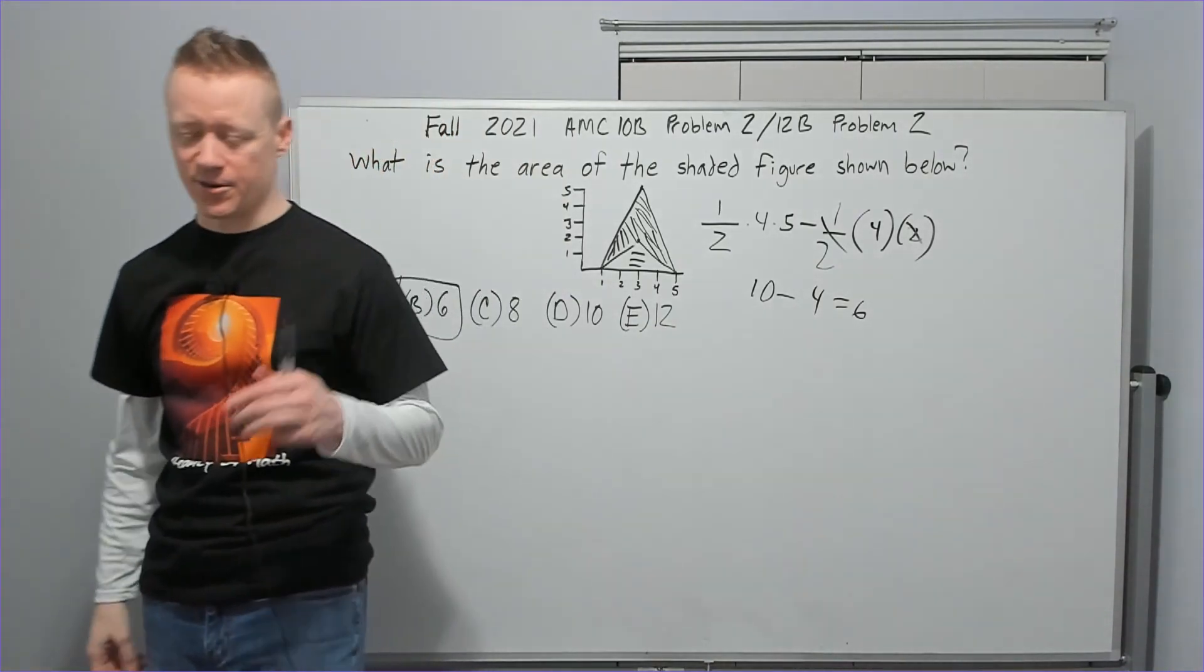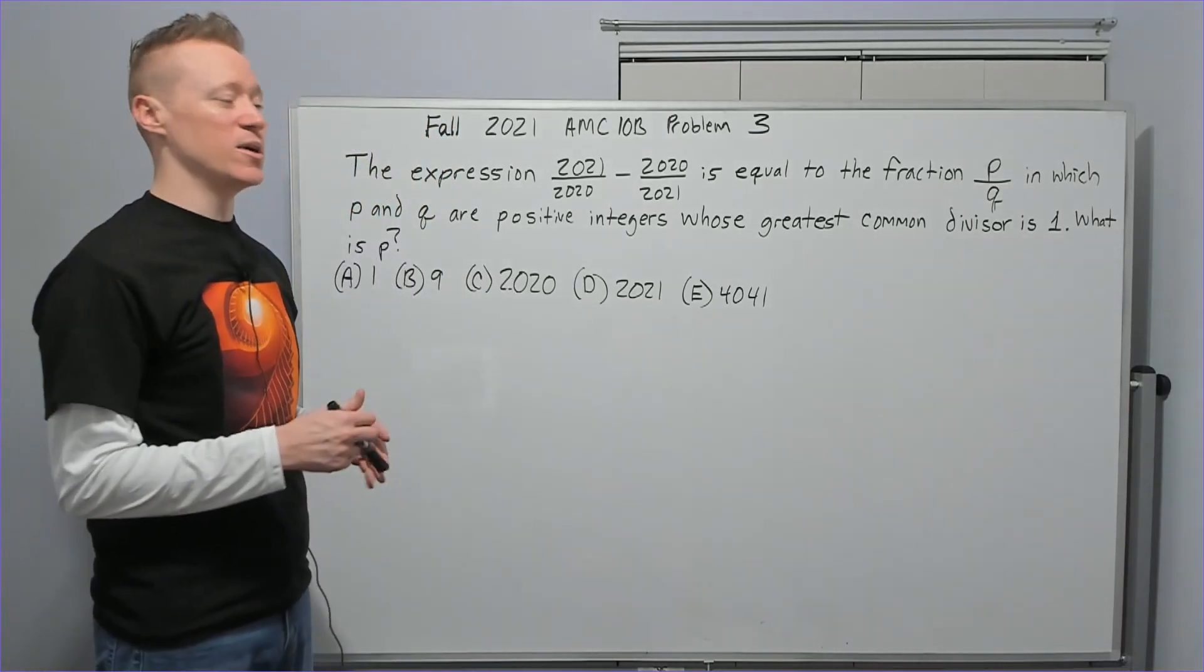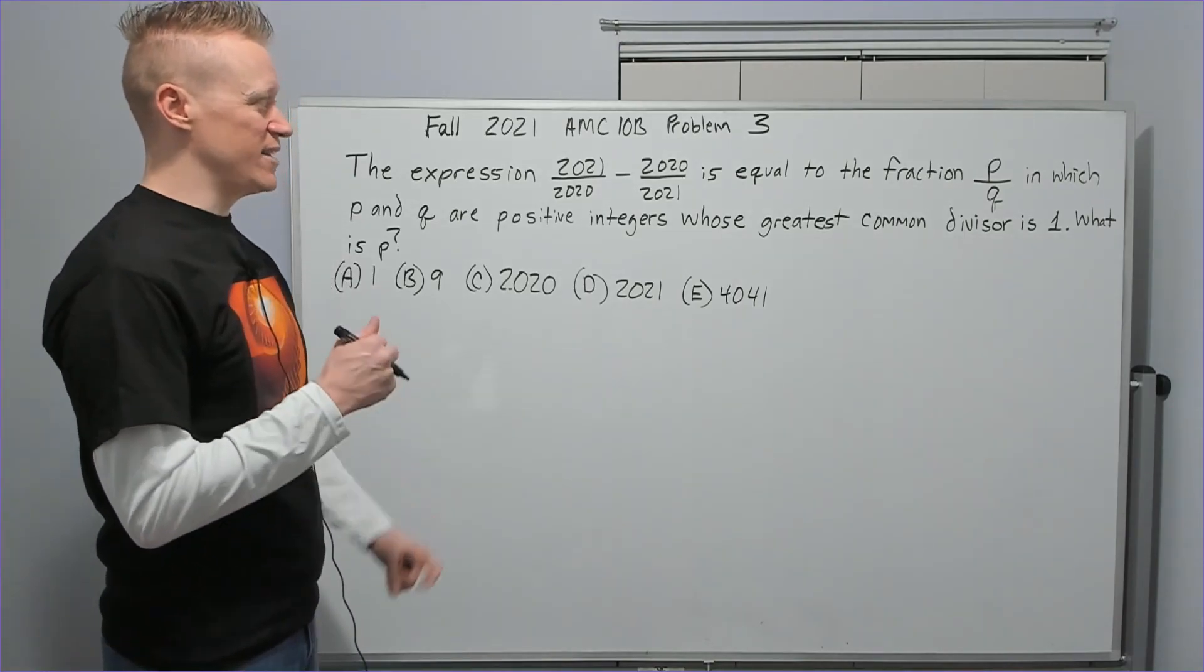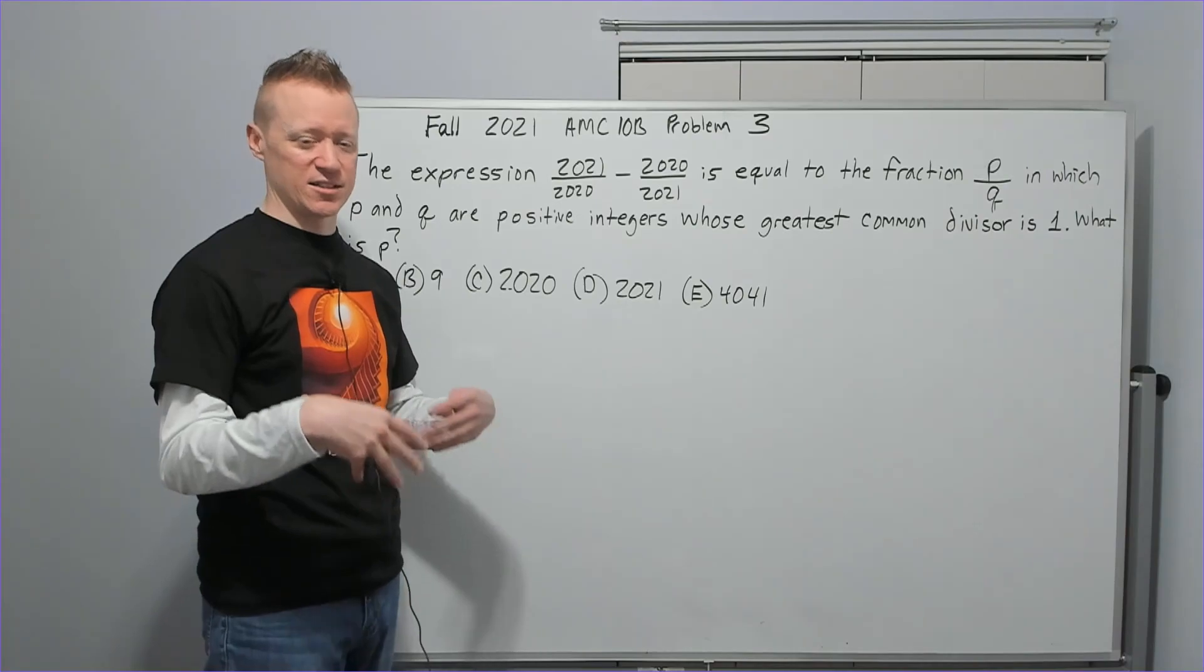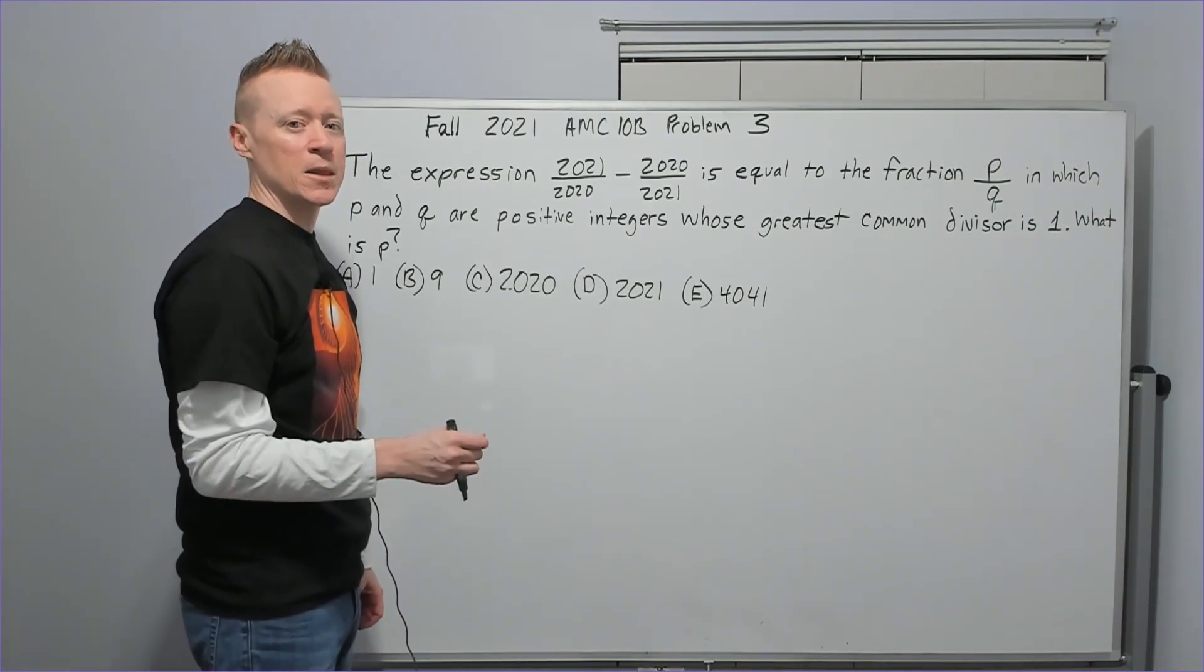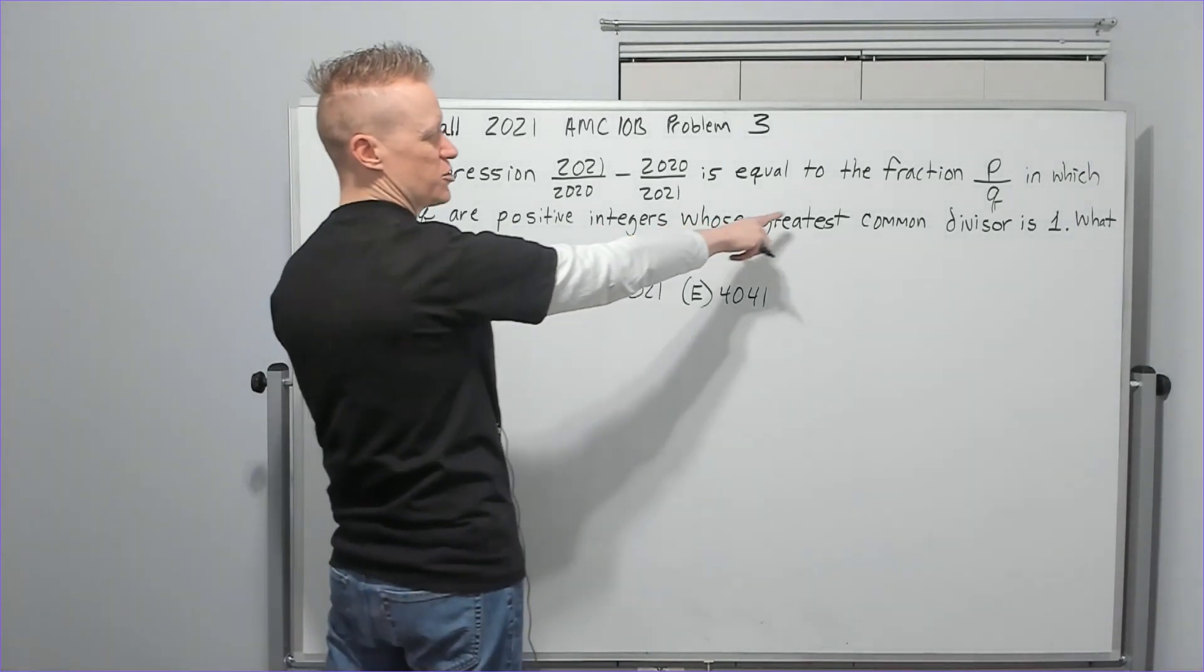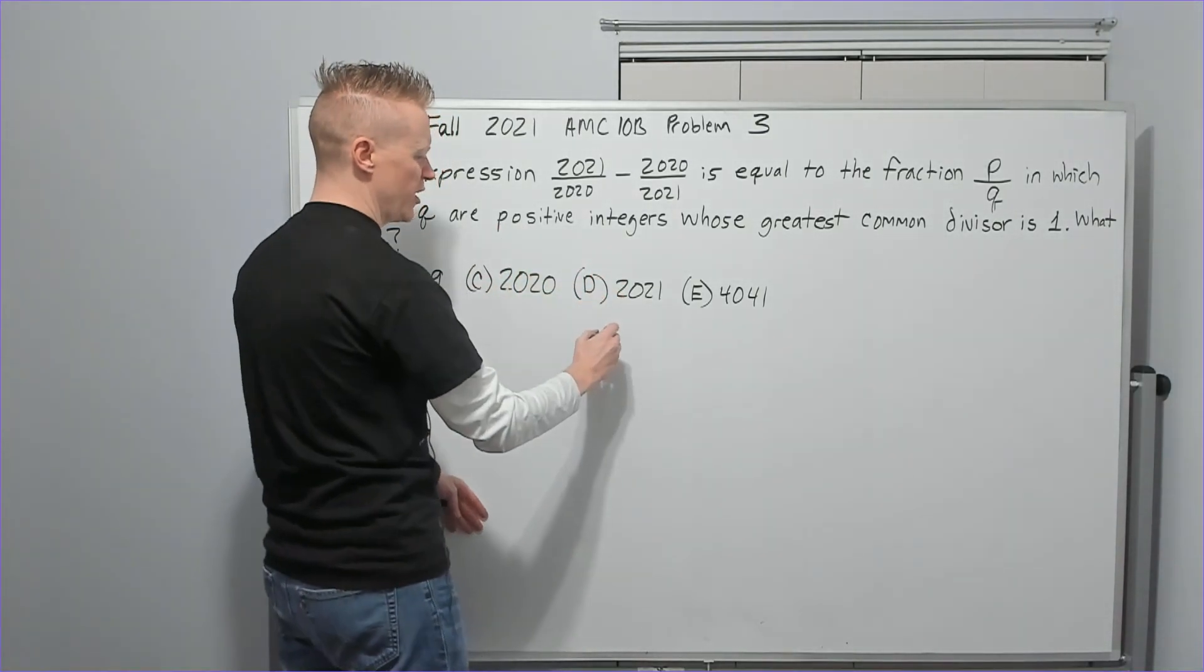Problem three. In my opinion, this is the question where the separation between experienced and inexperienced really starts as far as the AMC 10B was concerned. If this was your first time taking this test, this might have been a point where you got a little panicky, even though it's only number three, which actually probably alarmed you even more. If you were an experienced solver, meaning you've done almost all the past tests, you've done several AOPS books, you've got a lot of experience, then there's a lot of mechanical things in here that you're going to recognize and you probably didn't have too much trouble with it.